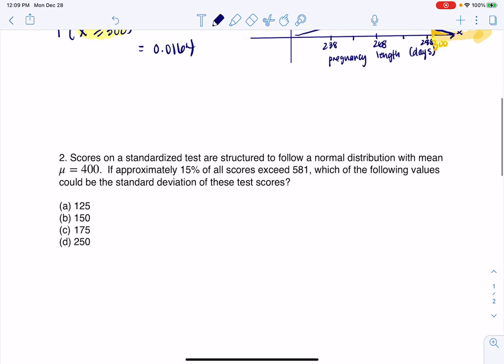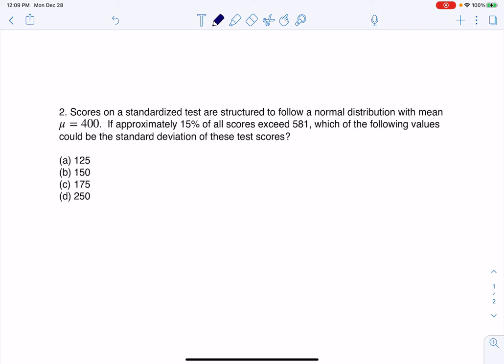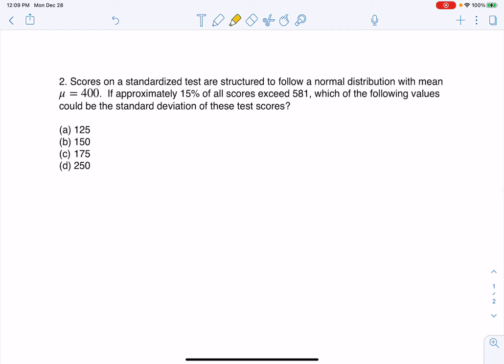Number two is a little bit trickier. Scores on a standardized test are structured to follow a normal distribution with a mean of 400. If approximately 15% of all scores exceed 581, which of the following values could be the standard deviation? Now, this one's trickier because I'm not given the standard deviation, I'm asked for it. Some buzzwords that are floating around here. I see I've got a normal distribution, I've got the mean, and I've got a percentile. 15% or the top 15% is cut off by 581, and these are test scores. So my variable here is some standardized test score. It's numerical, and they're telling me that it's got the bell shape, so I know X is distributed normally with a mean of 400, but I don't know the standard deviation.